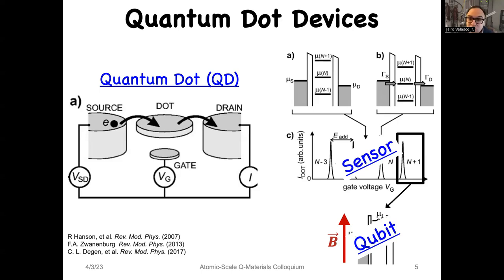There is a rich history and strong current experimental effort using conventional semiconductors such as gallium arsenide and silicon as material platforms for quantum devices. My presentation today will focus on quantum dot devices based on graphene and its multi-layers, and I'll discuss some of the strengths that carbon-based materials possess for quantum dot devices.